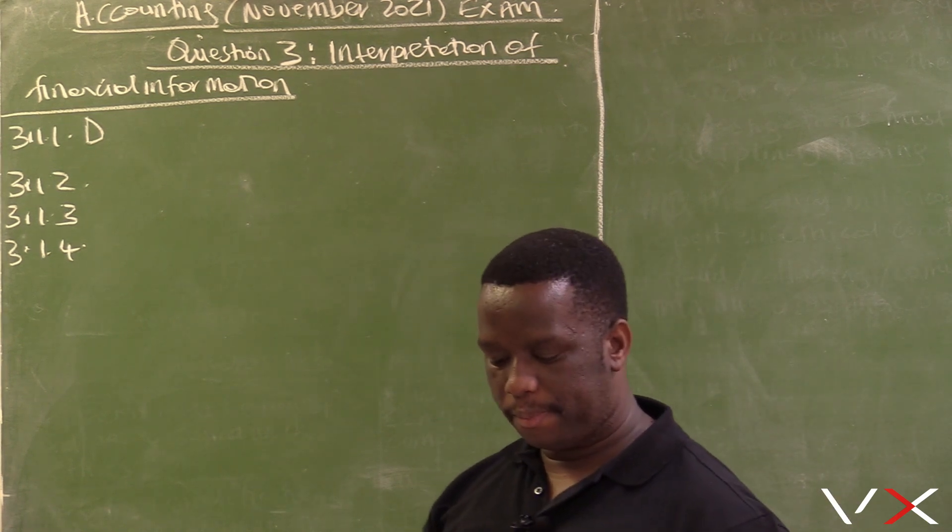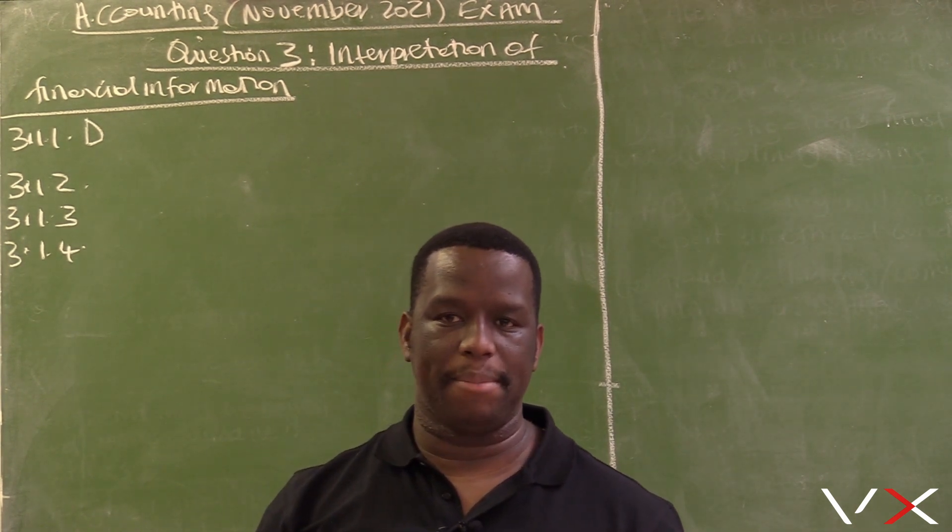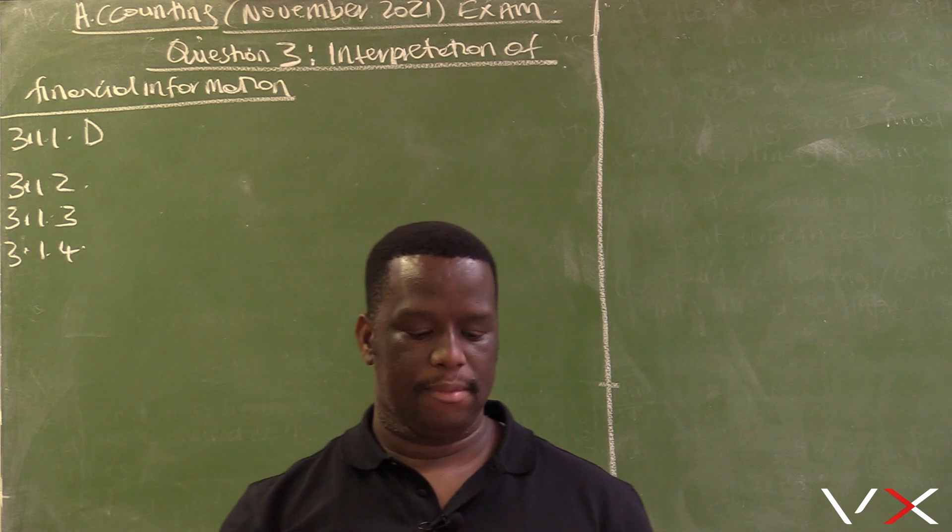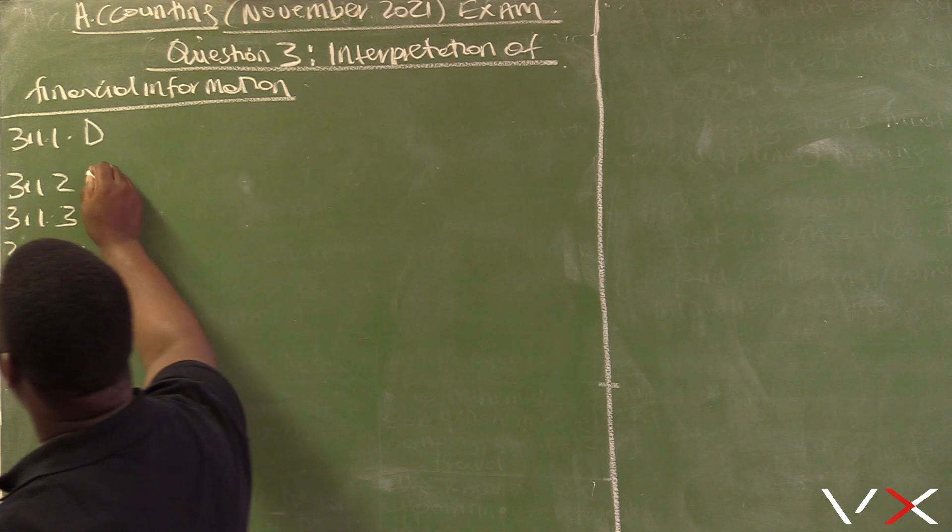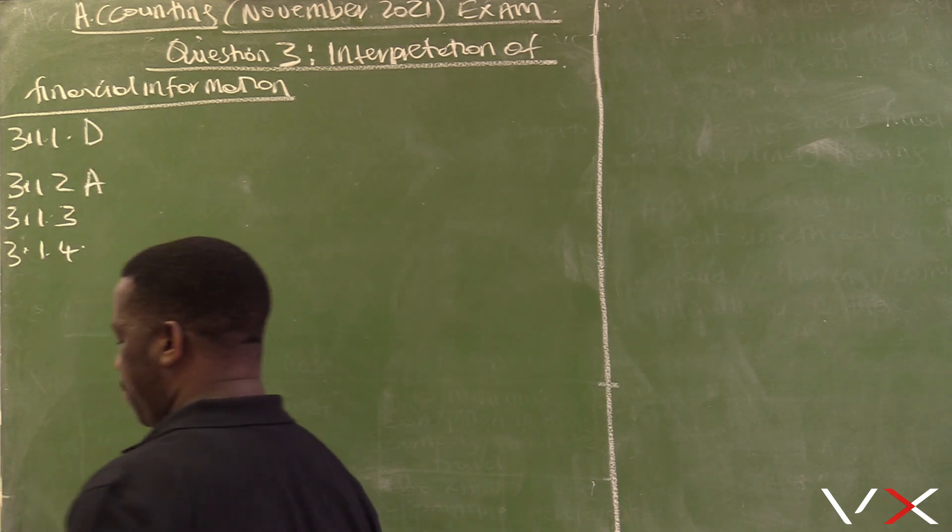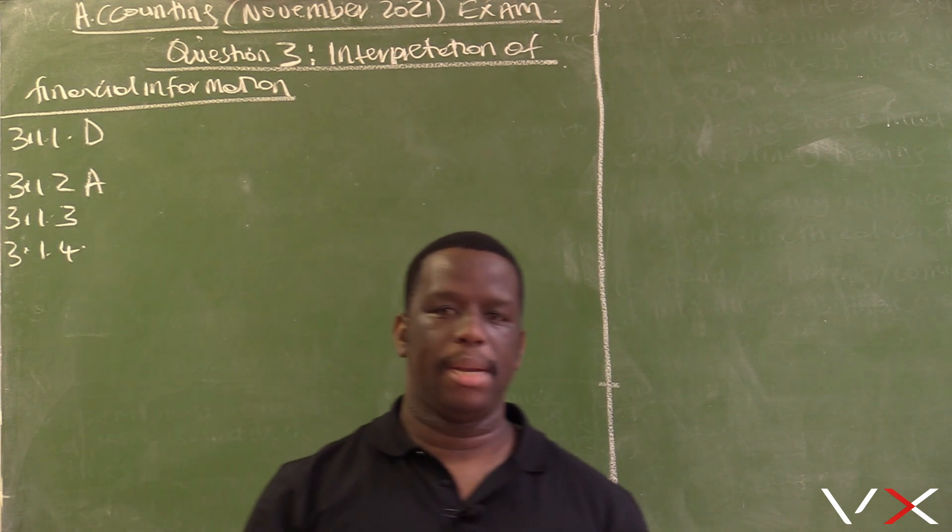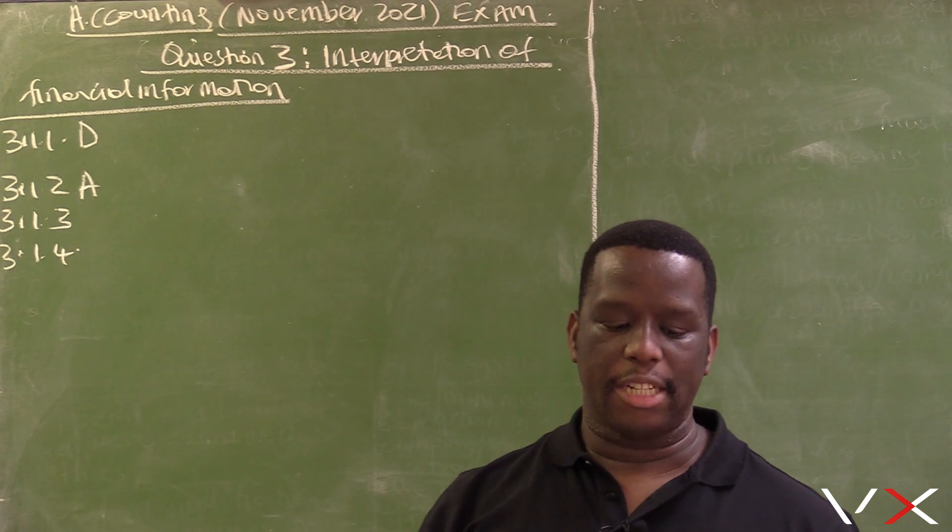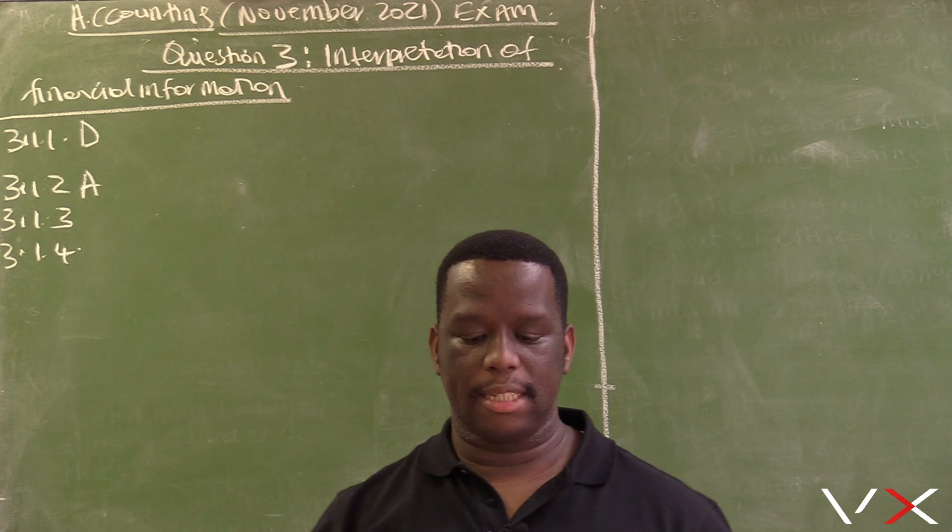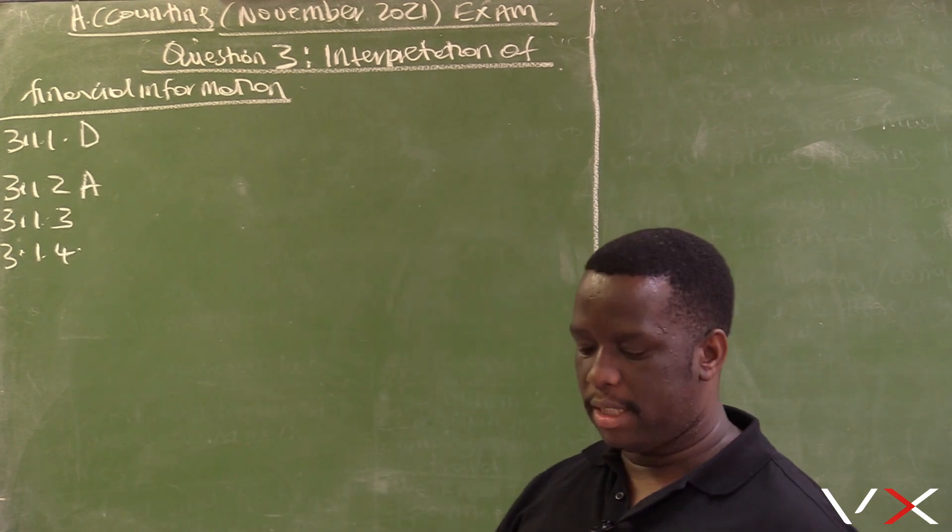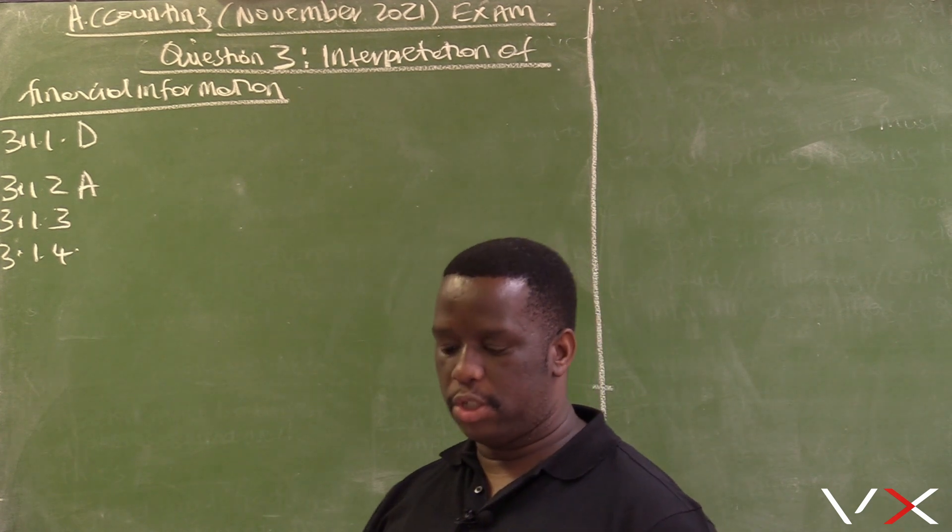3.1.2, the ability of a business to pay off its short-term debts. That is A, which is liquidity. Liquidity is the ability of the business to pay off its short-term debts. Remember, the ability of the business to pay off the total debts is solvency. But the short-term debts, that is liquidity.